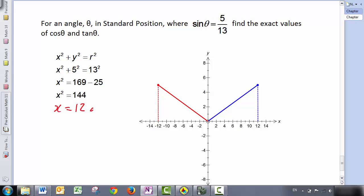If theta is in quadrant one, then X is 12. But if theta is in quadrant two, then X is negative 12. If theta is in quadrant one, then cos theta is 12 over 13, and tan theta is 5 over 12.